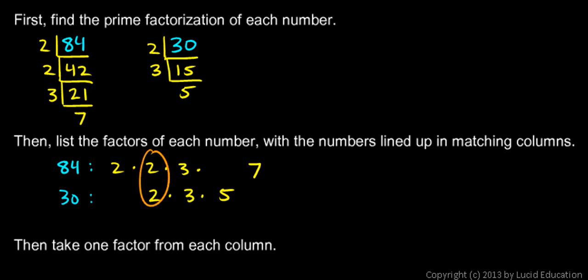And this is what we mean by matching columns here. I have a column of 2's. Here's another column of 2's. This column happens to be empty at that spot, and that's okay. Here's my 3's in this column. My 5's in this column. There was no factor of 5 for 84, so I just leave an empty space for it. And 7 there. So all the numbers are lined up in matching columns.